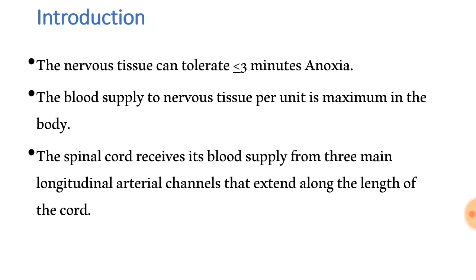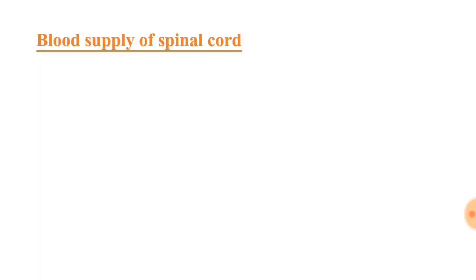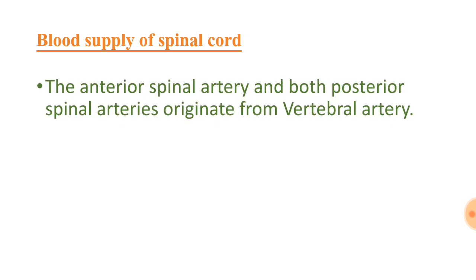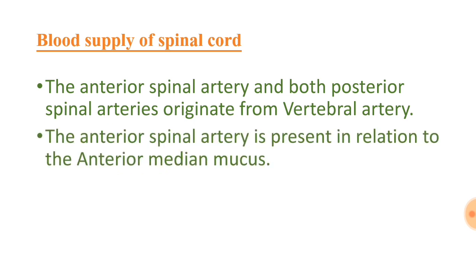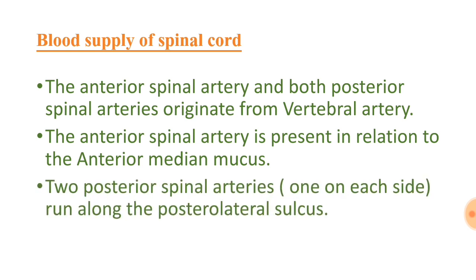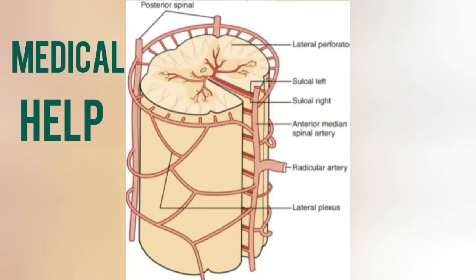These three main longitudinal arterial channels extend along the length of the cord. The anterior spinal artery and both posterior spinal arteries originate from the vertebral artery. The anterior spinal artery is present in relation to the anterior medial sulcus, and the two posterior spinal arteries — one on each side — run along the posterior lateral sulcus.